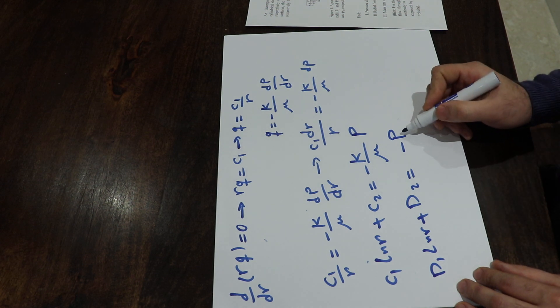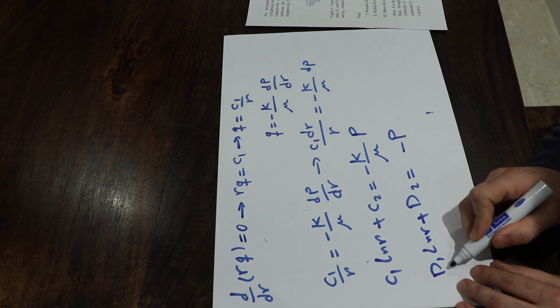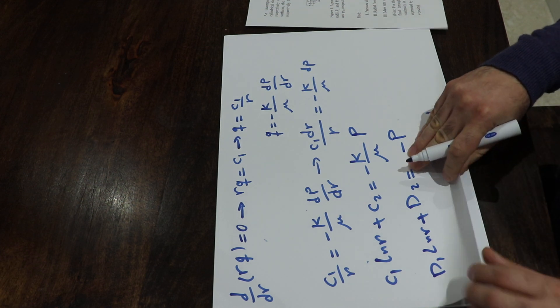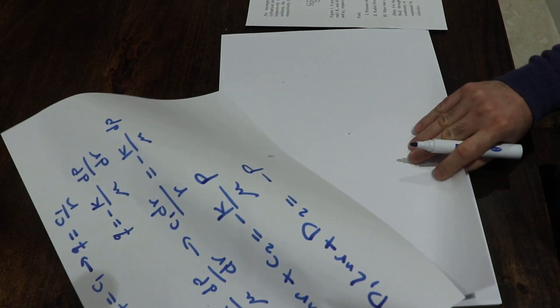So here we have the distribution of the pressure, but we need to calculate the value of D1 and D2. For that, we have two boundary conditions.